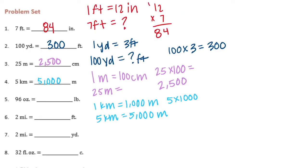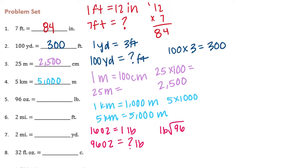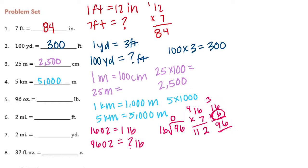96 ounces is equal to how many pounds? There are 16 ounces in 1 pound. So we have 96 ounces and we want to know how many pounds that is — this time we're going to divide: 96 divided by 16. 6 times 6 is 36, carry the 3, 6 times 1 is 6 plus 3 is 9. So it is equal to 6 pounds.